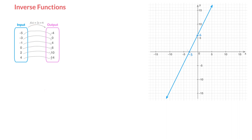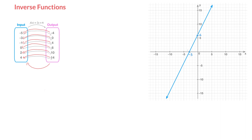This function's inverse function is a function which maps each of these output values back onto its corresponding input value. In other words, the inverse function is such that if we were to replace x by negative 4, it should give us an output value equal to negative 5. Similarly, for the input value 0, the inverse function should give us the output value negative 3. So the inverse function maps each of the outputs of f back onto its original input value. This function's inverse function, which we refer to with an f and an exponent of negative 1, takes the output values of f(x) as its input values, to then give us its output values, which are the input values of f(x).